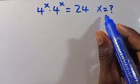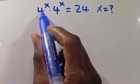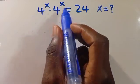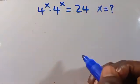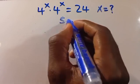What is the value of x given that 4 to the power of x times 4 to the power of x equals 24? Let's have its resolution.